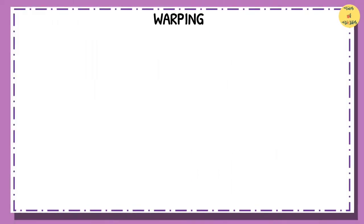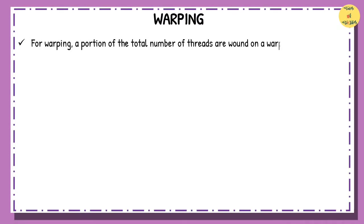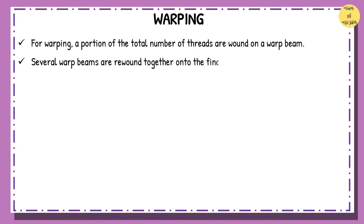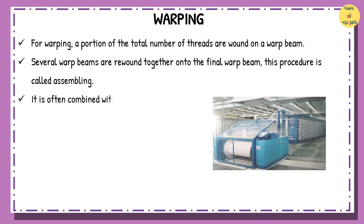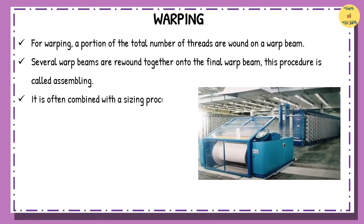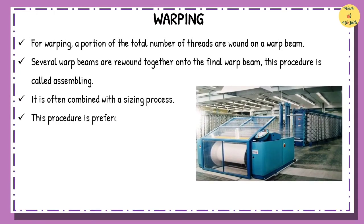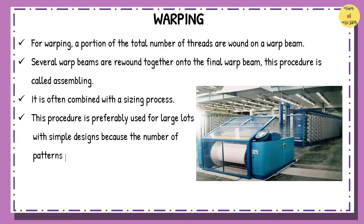For warping, a portion of the total number of threads are wound on a warp beam. Several warp beams are rewound together onto the final warp beam; this procedure is called assembling. It is often combined with a sizing process. This procedure is preferably used for large lots with simple designs because the number of patterns produced by the warp is restricted.